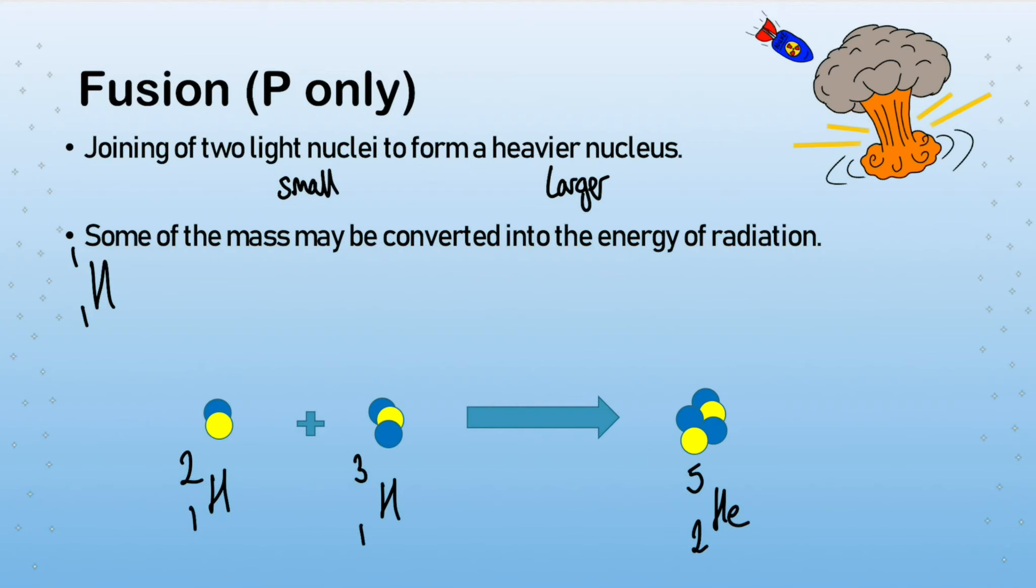But the second statement that we need to know is that in this process, some of the mass may be converted into the energy of radiation, which is a very weird concept. And you don't need to understand the how and the why, but it goes back to some brilliant work by Einstein, which shows that energy and mass can be interrelated and are kind of the same thing.